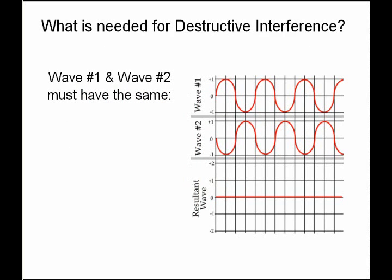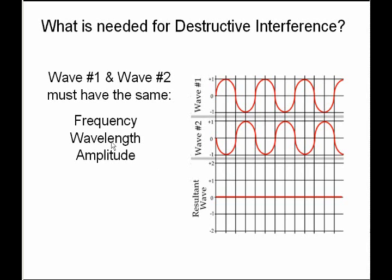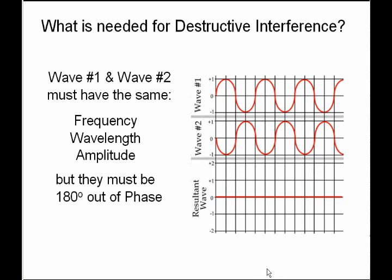For destructive interference, these two waves need to have the same frequency, the same wavelength, and to completely cancel out they need to have the same amplitude. What's different is the starting point — one starts at zero and the other starts over at 180 degrees. So we say it has a phase shift of 180 degrees, or it's 180 degrees out of phase.